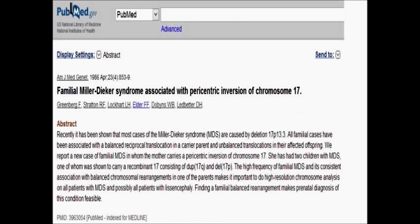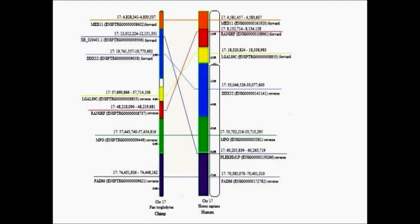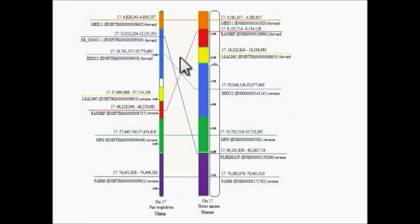Now, familial Miller-Dieker syndrome is associated with paracentric inversion of chromosome 17. And when you compare the human chromosome 17 with the homologous chimpanzee chromosome 17, you see a substantial paracentric inversion.